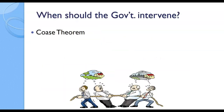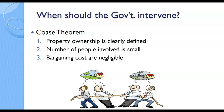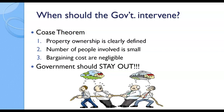This brings us to the Coase Theorem: should the government intervene? The government should get involved depending on three things: whether property ownership is clearly defined, whether the number of people involved is small, and whether bargaining costs are negligible. If property ownership is clearly defined, the number of people is small, and bargaining costs are low — say, $50 to figure it out — then government should stay out. If property ownership is undefined, the number of people is large, and bargaining costs are high, the government might get involved. This is a spectrum — it could be a small thing or a really large thing.